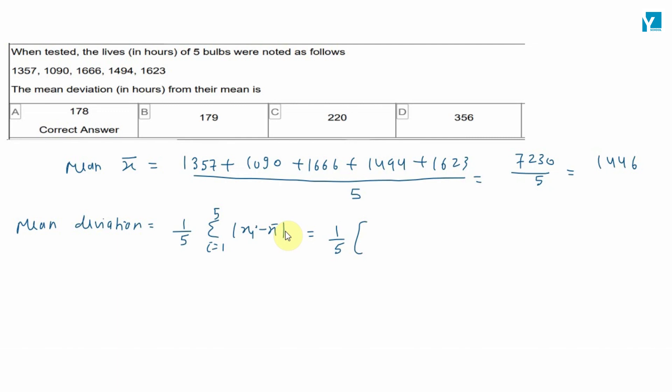Let's note this: 1357 minus 1446, plus 1090 minus 1446, plus 1666 minus 1446, plus 1494 minus 1446, plus 1623 minus 1446.